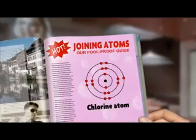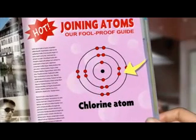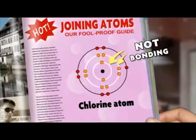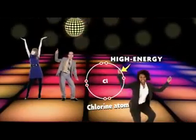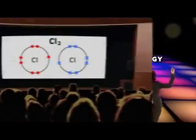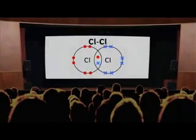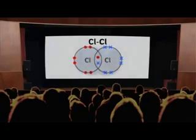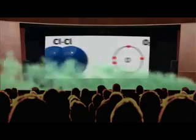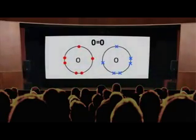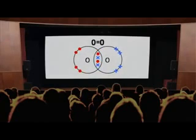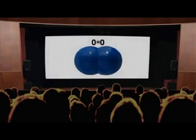Another way to show covalent bonds is a dot and cross diagram. Here is a chlorine atom — when you draw a bonding diagram, you only need to show the electrons in the highest energy level, as they're the only ones which can bond. Here's how you show a chlorine molecule: one pair of electrons is shared between the two atoms. Chlorine gas is made from molecules like this. And here's how you show oxygen gas — notice that these two atoms share two pairs of electrons. This is a double bond.